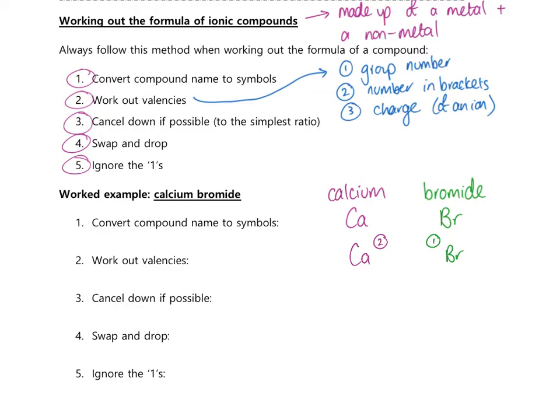Step three is to cancel down the valencies if possible — getting them into the simplest ratio. If there is a number that you could divide both valencies by, you would do it. For example, if they were both two, you can divide by two to cancel down: two to two is the same as one to one. But in this case, the ratio is two to one, and there is nothing simpler to cancel it down to. Essentially, if you have any ones, you will not be able to cancel it down. So for this example, cancelling is not possible.